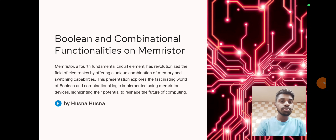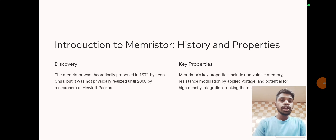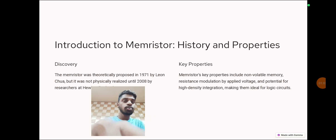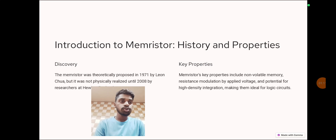Introduction to memristors: issues and properties. Discovery: the memristor was theoretically proposed in 1971 by Leon Chua, but it was not physically realized until 2008 by researchers at Hewlett-Packard. Key properties of memristors include non-volatile memory, resistance modulated by applied voltage, and potential for high-density integration, making them ideal for logic circuits.